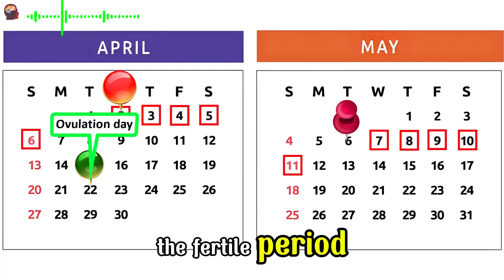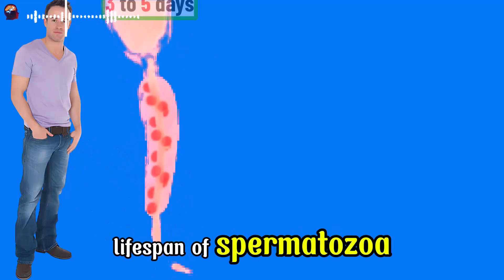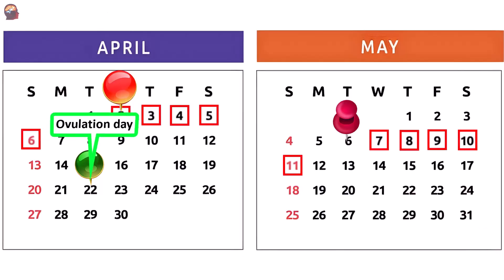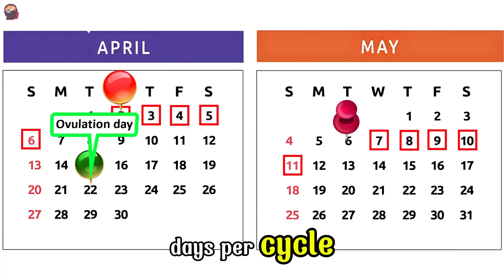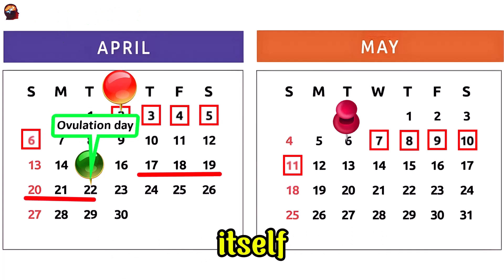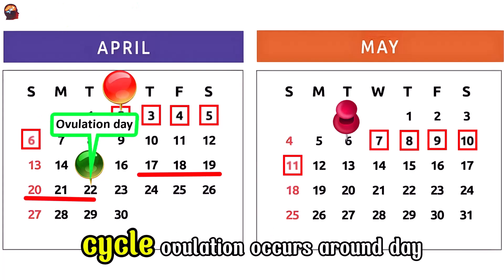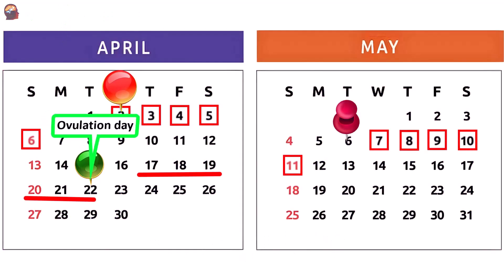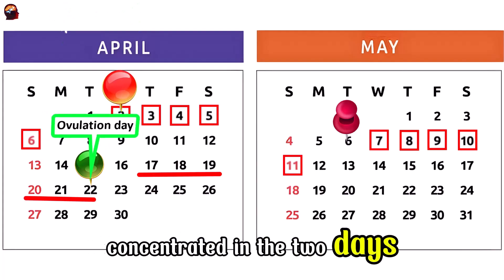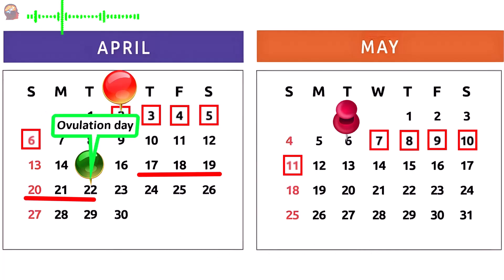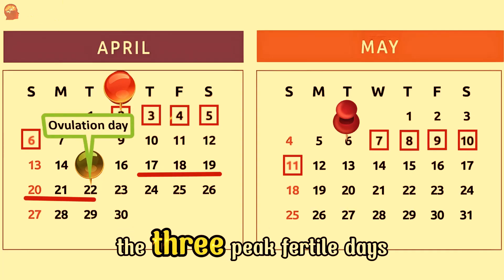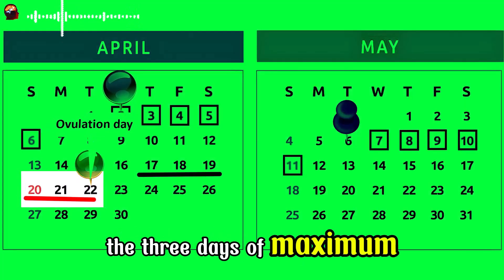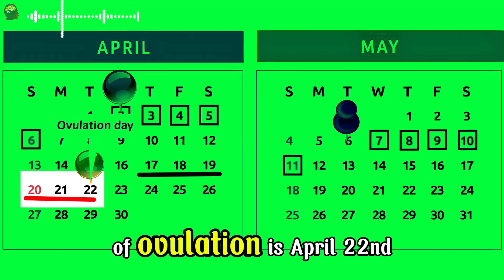Now it's easy to identify the fertile period. It is determined by the lifespan of spermatozoa, 3 to 5 days in the female genital tract, and that of the egg, 12 to 24 hours after ovulation. The fertile window lasts 6 days per cycle — the 5 days preceding ovulation and the day of ovulation itself. So, for a 35-day cycle, ovulation occurs around day 21 and the fertile window extends from day 16 to 21. The peak fertility period is concentrated in the 2 days preceding ovulation and the day of ovulation. For a 35-day cycle, the 3 peak fertile days are the 19th, 20th, and 21st days of the cycle. In this example, the 3 days of maximum fertility are April 20th, 21st, and the day of ovulation, April 22nd.